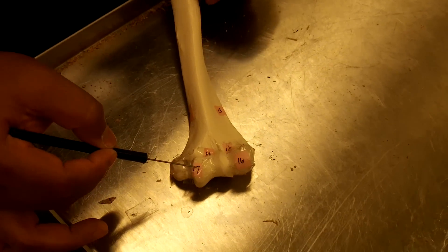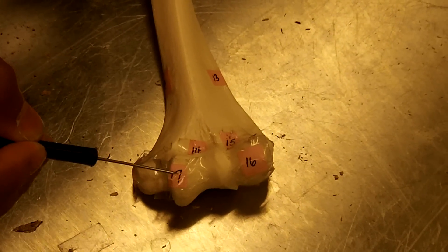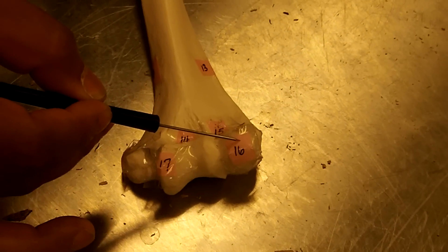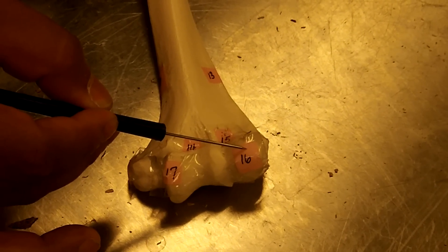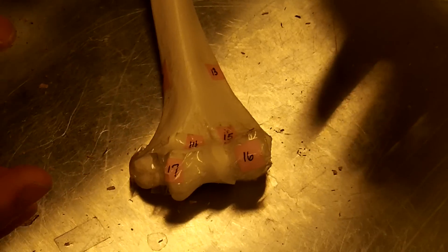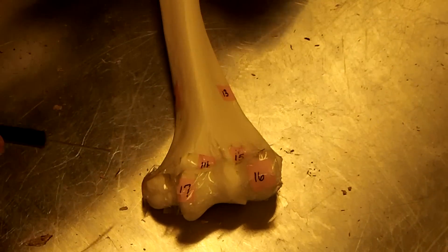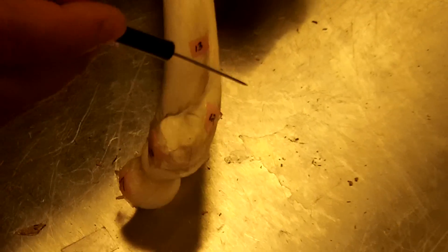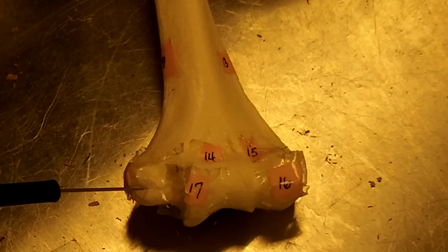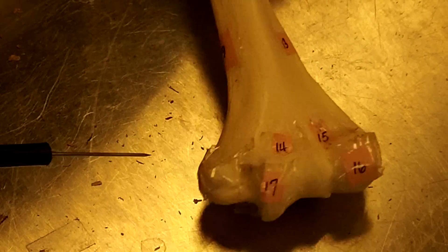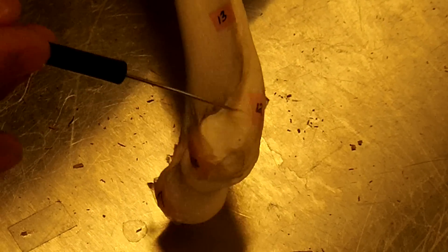So this is the medial condyle, which is known as the trochlea. On this side, this is the lateral condyle, which is known as the capitulum. On the outsides of the condyles, surrounding the condyles, are the epicondyles. Over here is the medial epicondyle, and over here is the lateral epicondyle.